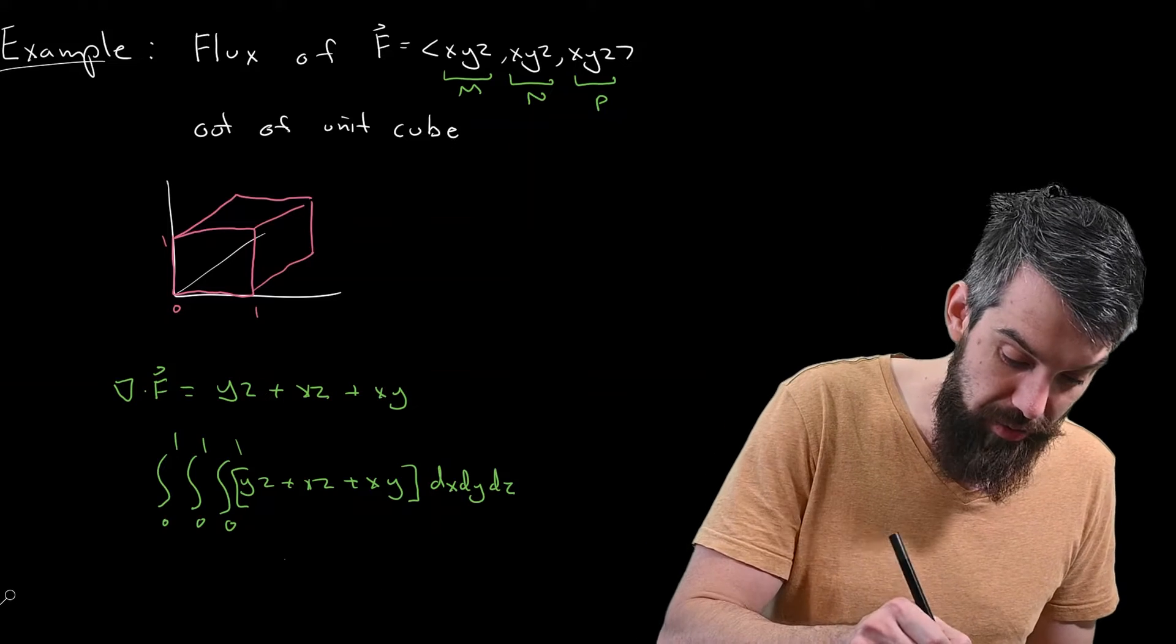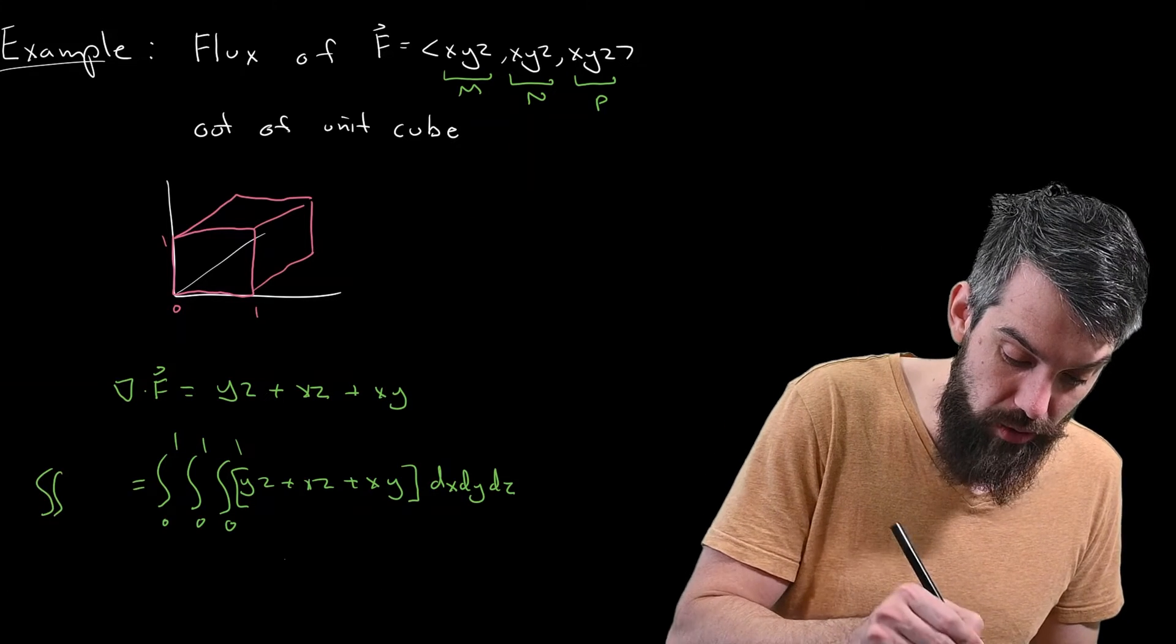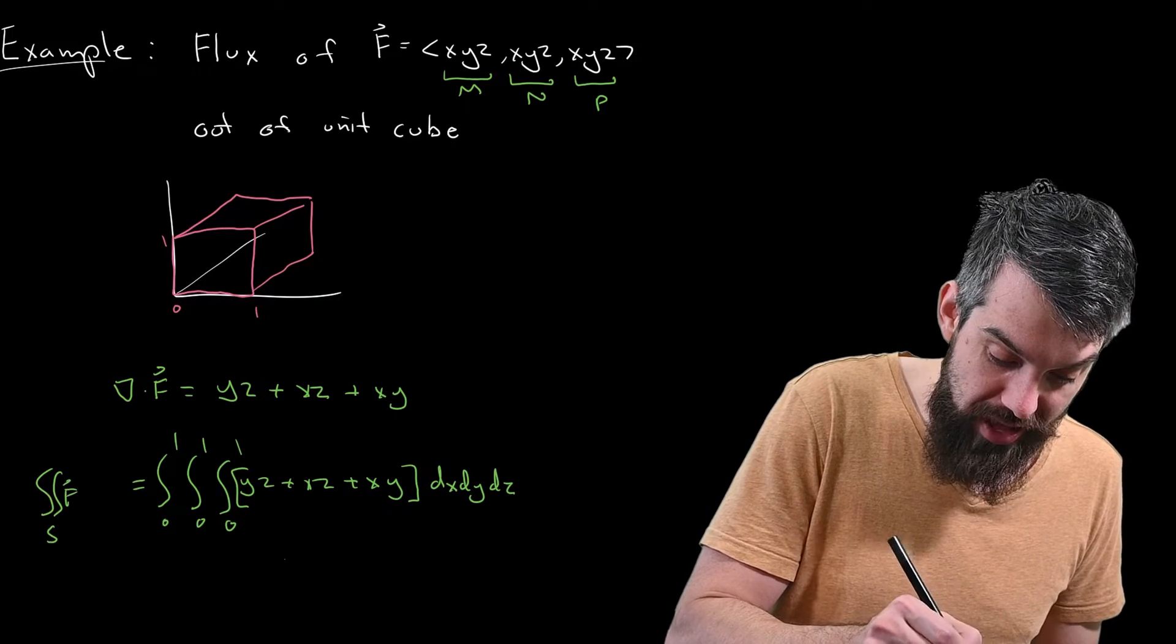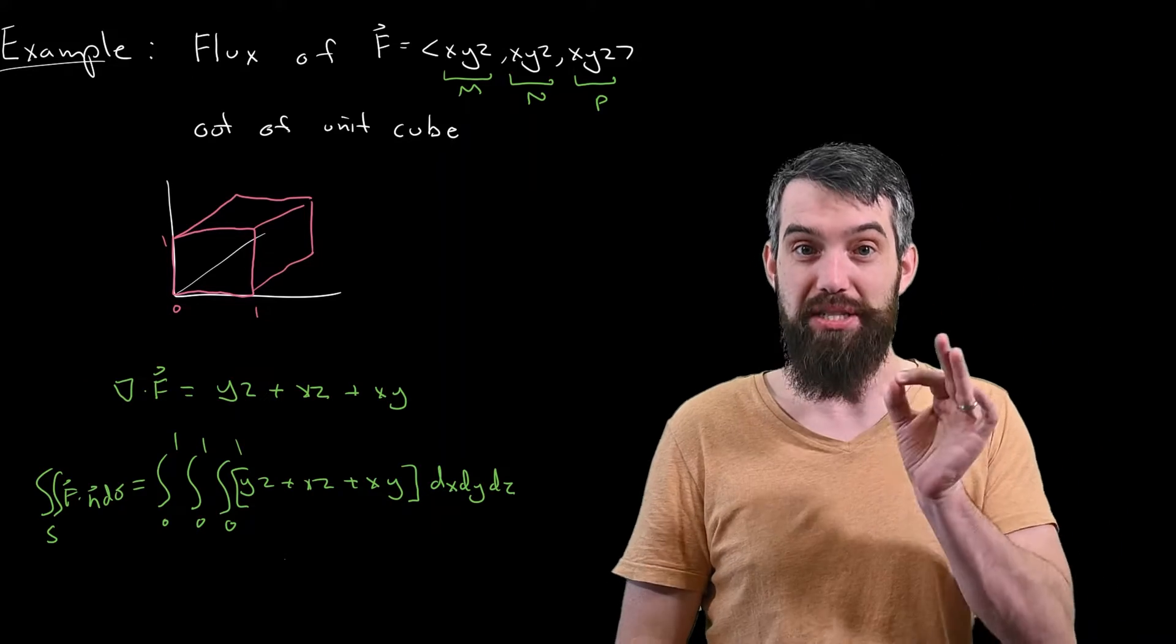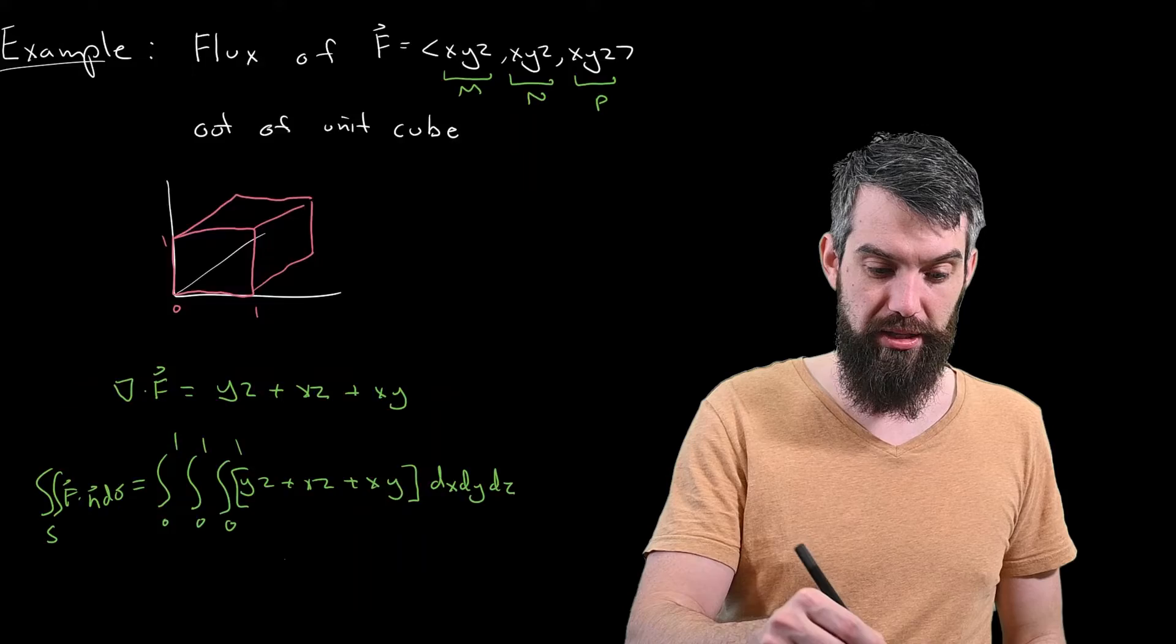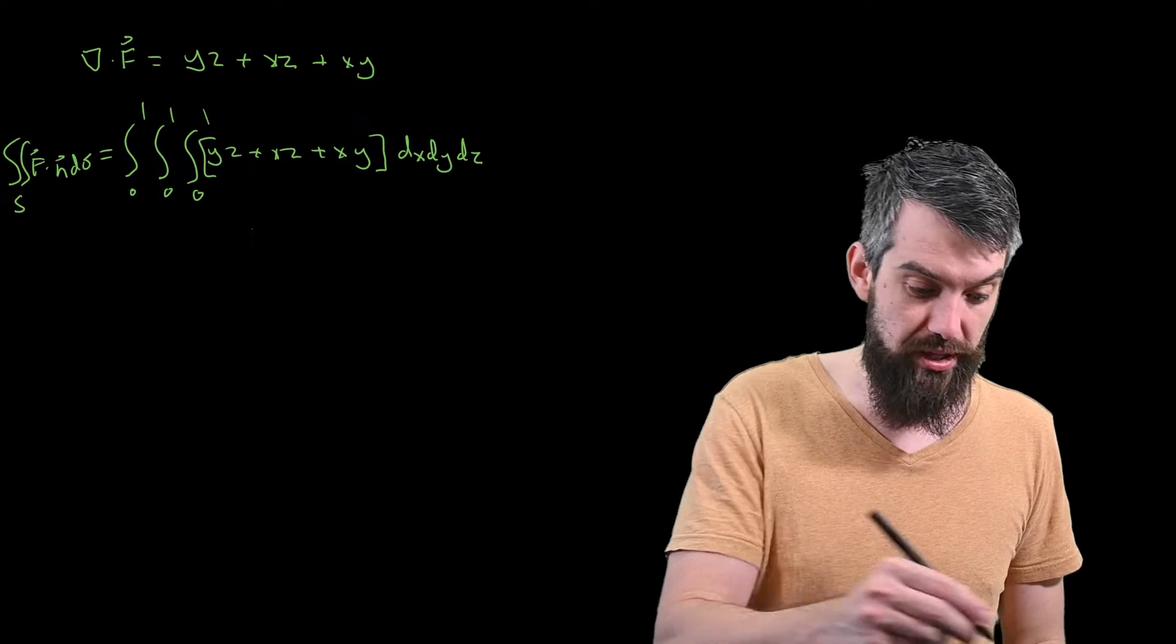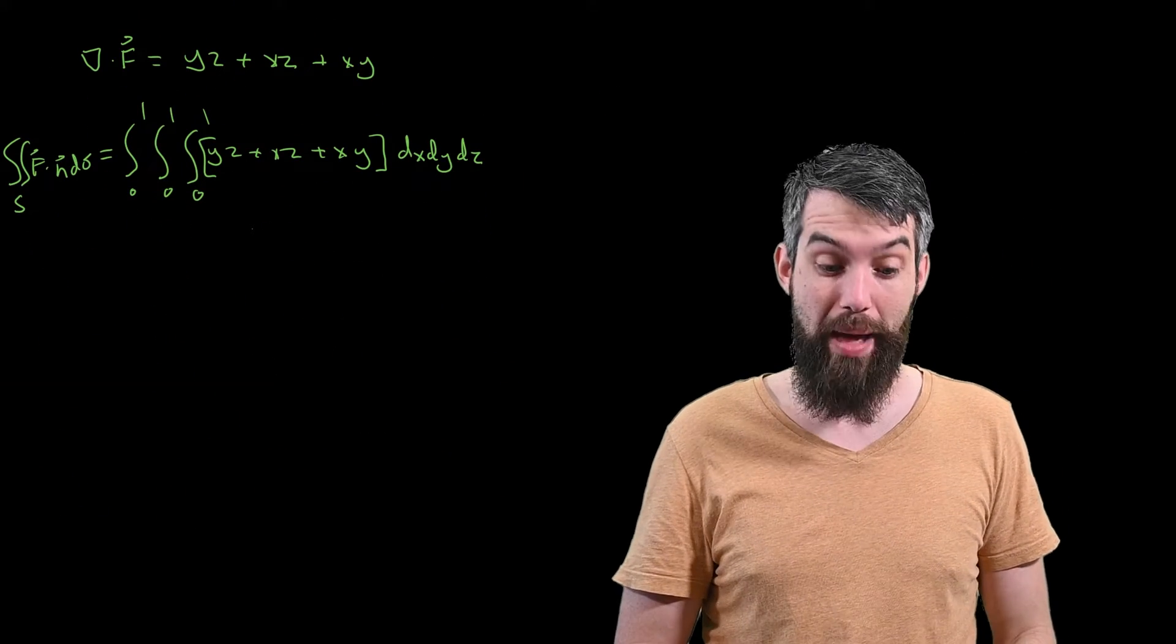And by the divergence theorem, this entire thing better be equal to that surface integral, the f dot n d sigma. That is the flux across the cube. Okay, so let's go and try to actually do this computation now. It shouldn't be so bad for us.